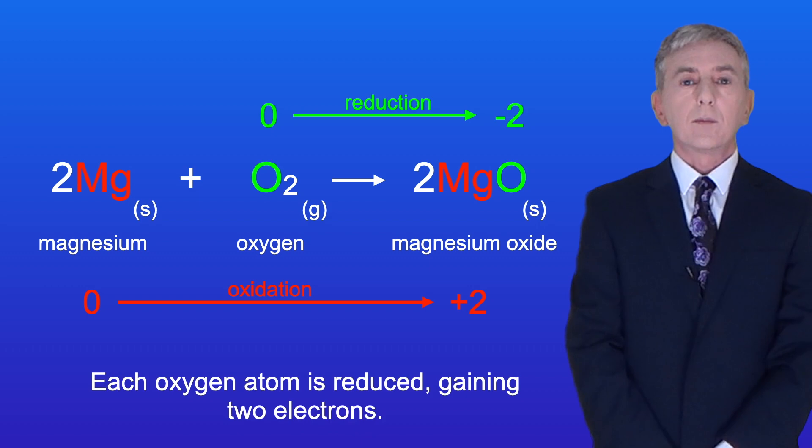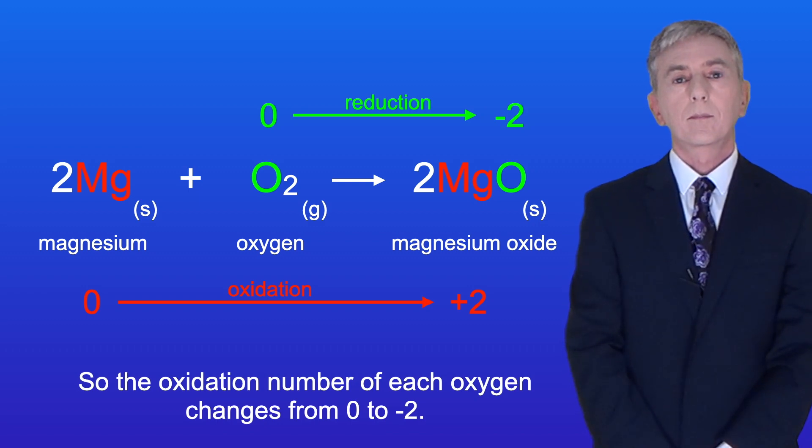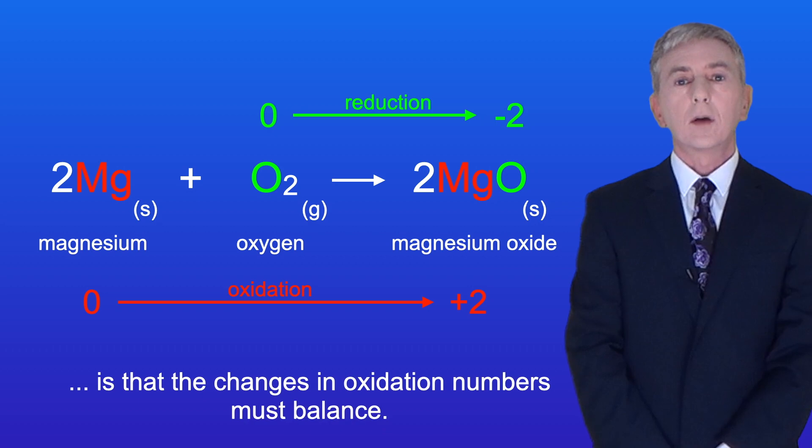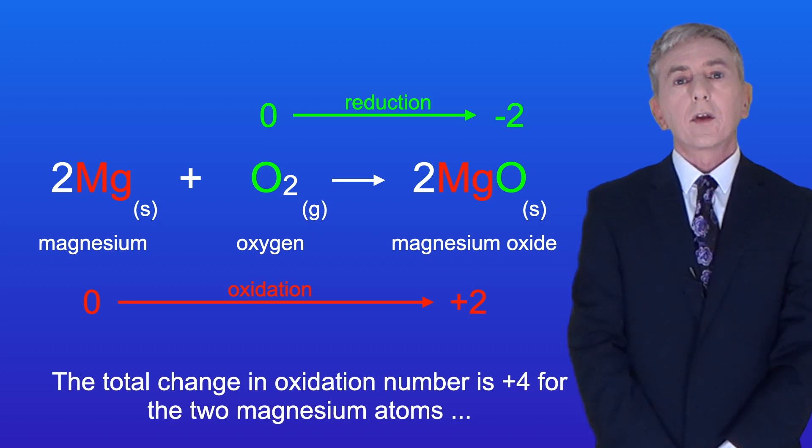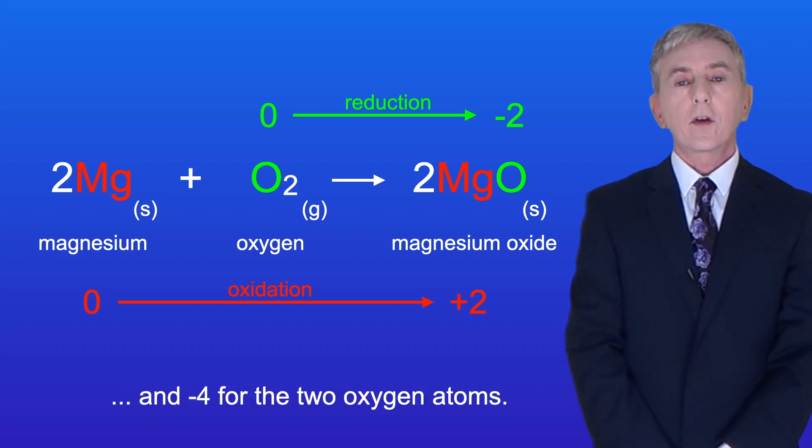Each oxygen atom is reduced, gaining two electrons. So the oxidation number of each oxygen changes from zero to minus two. Now a key idea you need to understand is that the changes in oxidation numbers must balance. The total change in oxidation number is plus four for the two magnesium atoms, and minus four for the two oxygen atoms.